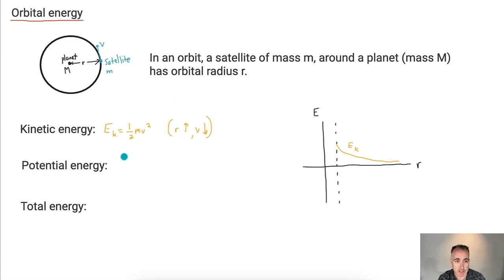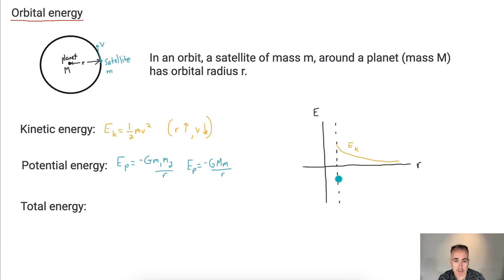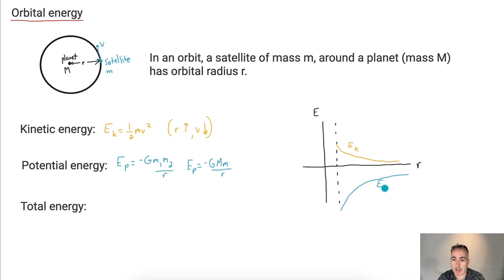The potential energy we've seen before. It goes EP equals minus G capital M lowercase m over R. That version is a little nicer to think about. This energy is proportional to one over R, but it's negative, so it goes down below the axis. It's actually even more negative than the kinetic energy is positive. So this is the potential energy — it's negative. Now for total energy, remember that's just EP plus EK.